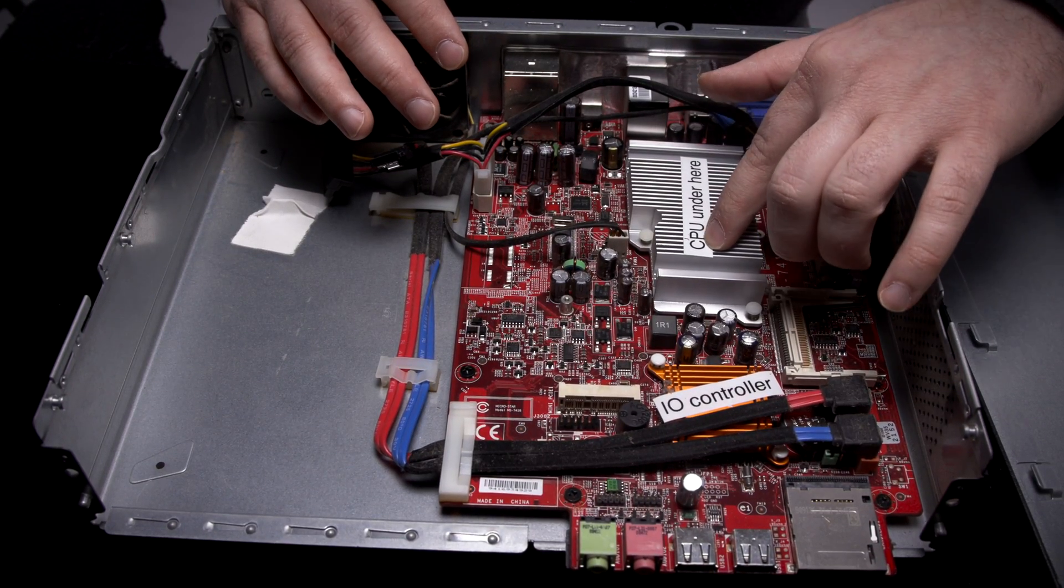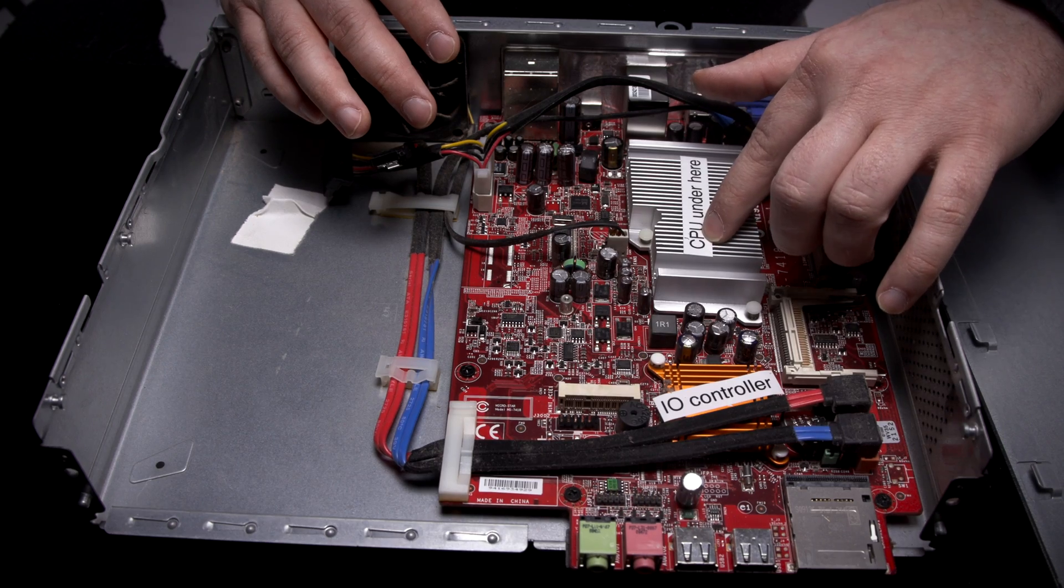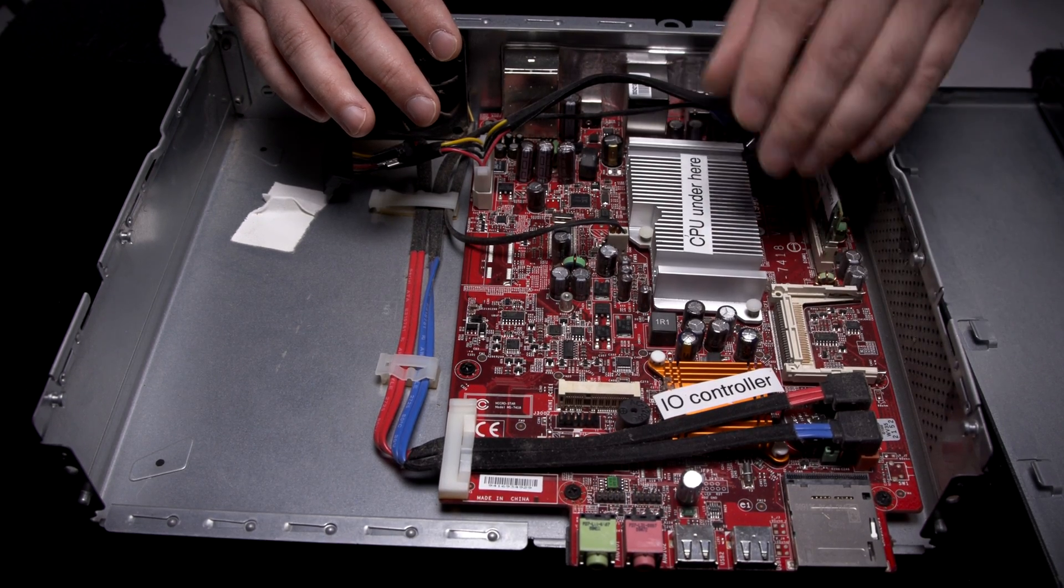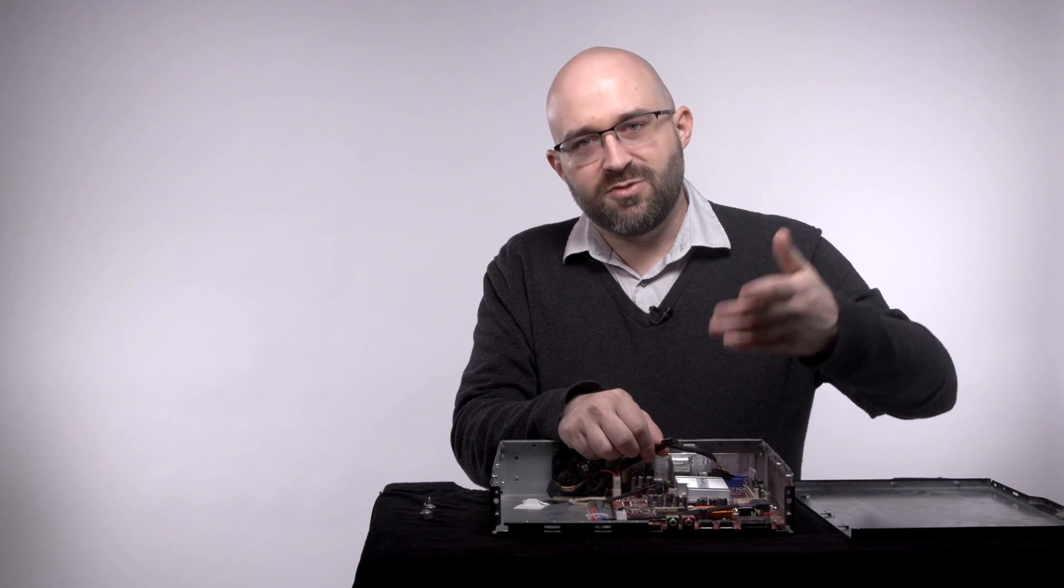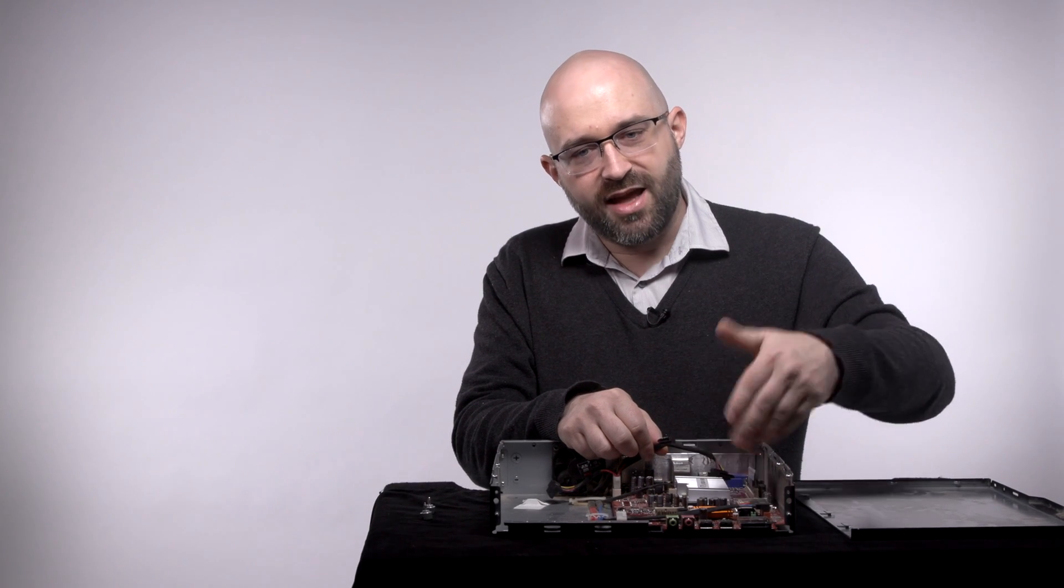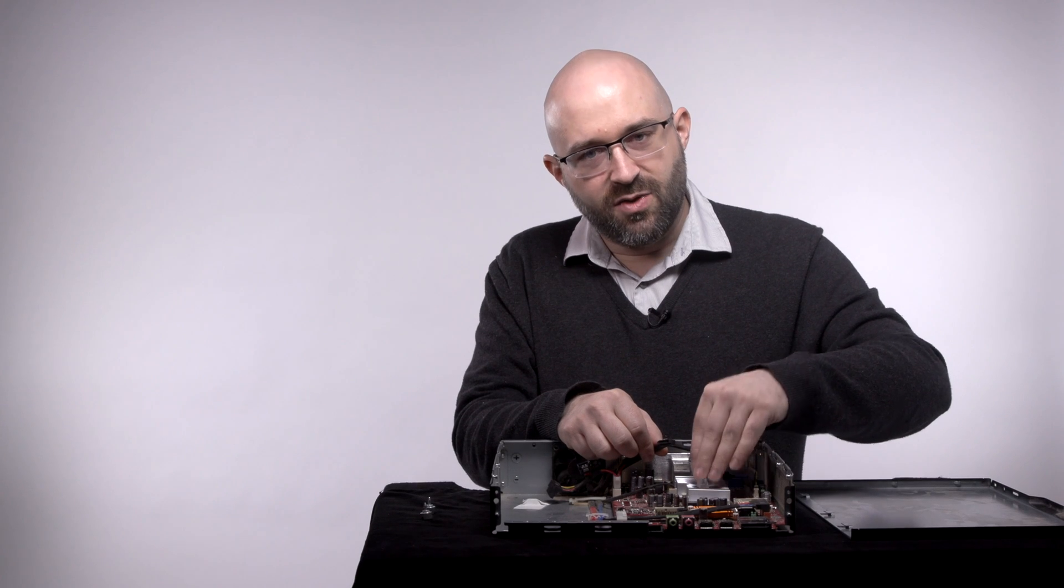All the computing happens under here with the CPU, the central processing unit. The metal here is called a heat sink. CPUs generate heat when they function, and this metal will gather and dissipate that heat. Let's take a look at what's underneath this.